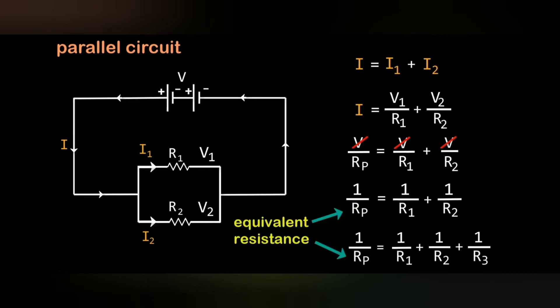Then V is cancelled from both sides. Since V remains constant, we are not splitting into V1 and V2. So we get the equation as 1 by Rp is equal to 1 by R1 plus 1 by R2. For three resistors, the equation is 1 by Rp is equal to 1 by R1 plus 1 by R2 plus 1 by R3.